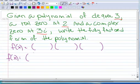We have a zero at 2, so our first factor is x minus 2. We also have a zero at 3i, so we're going to write that as x minus the zero. The zero is 3i, so it's x minus 3i.